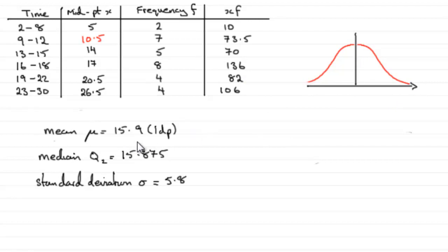In the earlier parts, we found out that the median Q2 is 15.875, and we've worked out that the mean μ is 15.9 to one decimal place. So first of all, you can see that these two values are very similar, and that's what you would expect to have for a normal distribution.